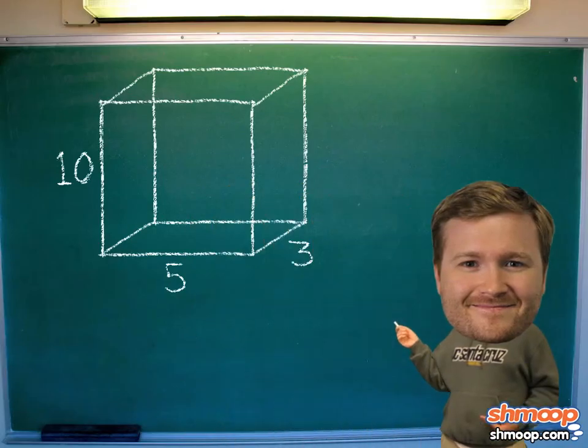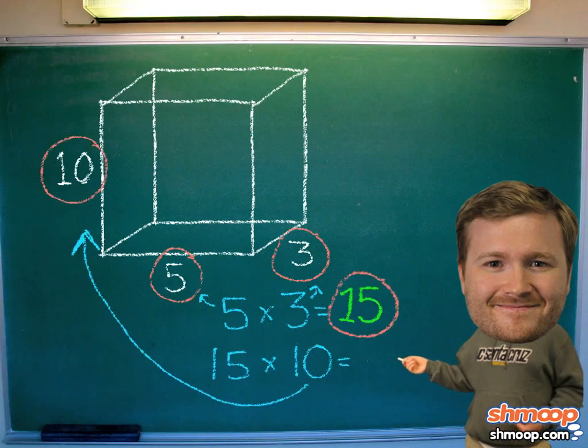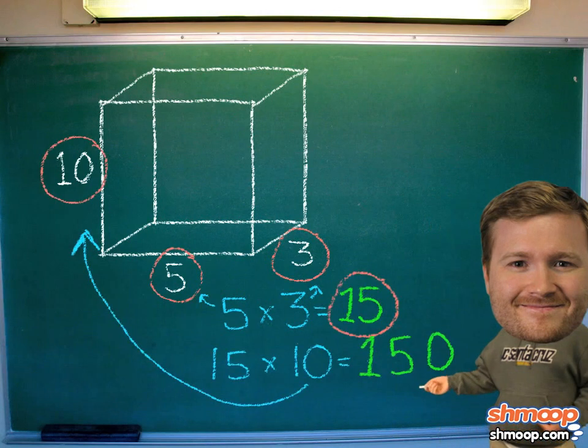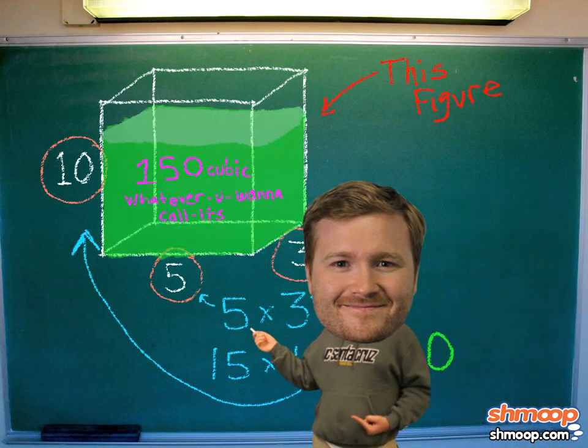Let's try a volume calculation — we'll pump up the volume a little bit. Three times five is fifteen, and fifteen times ten is one hundred and fifty. So this figure has a volume of one hundred and fifty cubic whatever you call it.